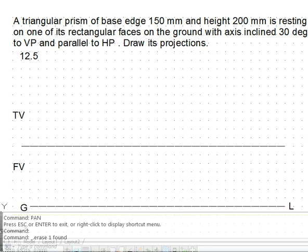Now about the dimensions — the true dimensions are given for the solid. It's a triangular prism with base edge 150 mm and height 200 mm. This height is the height of the solid, and the base is a triangular shape — we can assume it to be a regular equilateral triangle.